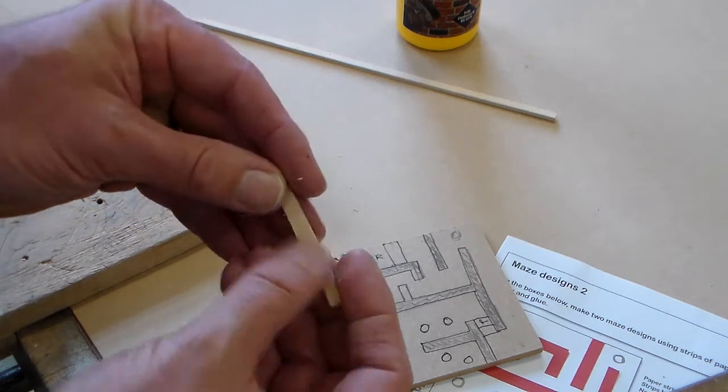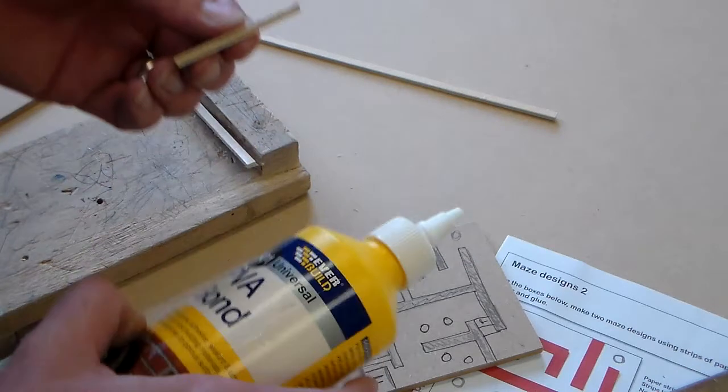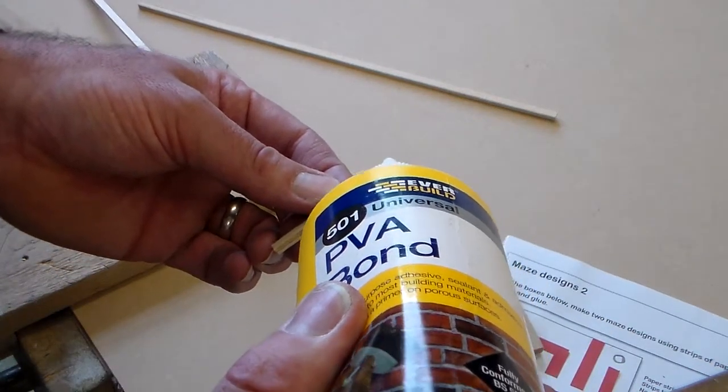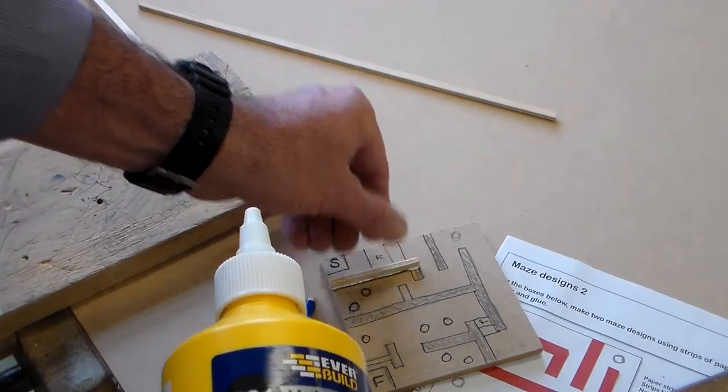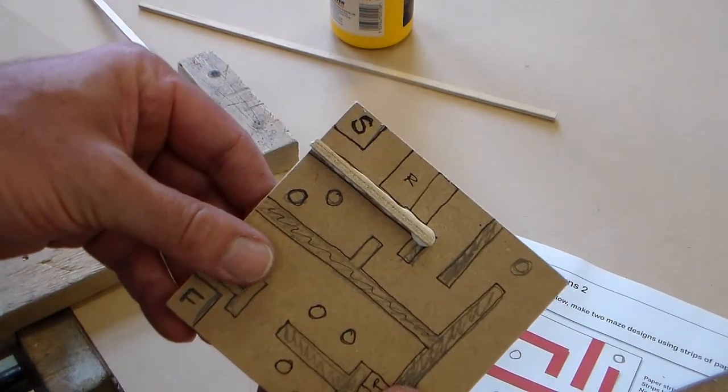We're going to take our tenon saw and carefully saw our wooden strip. We might need to clean that up with a piece of abrasive paper first and then we can carefully take our PVA glue, small piece of PVA glue, and set that onto our maze.